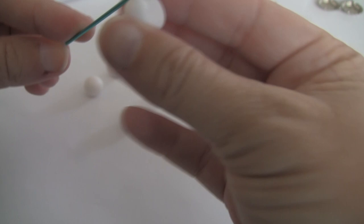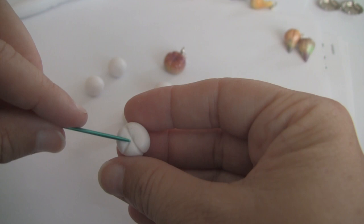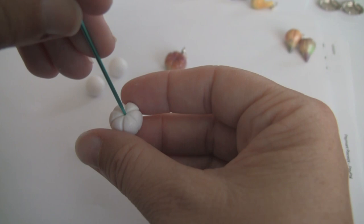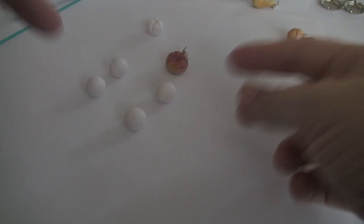I take my double pointed knitting needle—you could always use a toothpick—and here we go. I'm going to do thirds, so this has six segments. You could do this with the pumpkins as well, and I do like to poke a little hole in the middle.